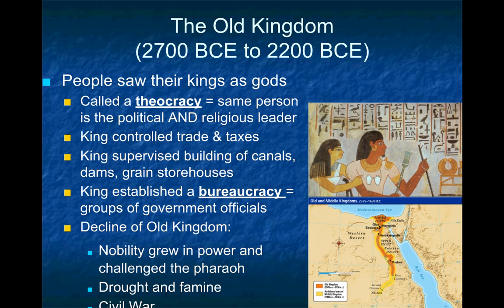These governors collected taxes and made sure everyone was abiding by the law. The pharaohs often rewarded these governors with land instead of paying them. As the bureaucracy grew along with the kingdom, the nobles grew in power. Because they received land as payment and often passed it down to their heirs and sons, what we start to see is that as the bureaucracy developed, the nobility became increasingly powerful.